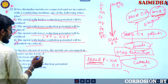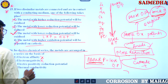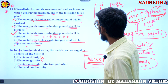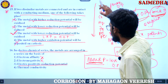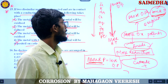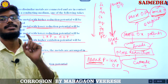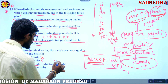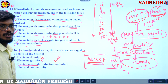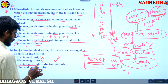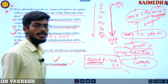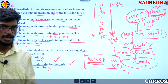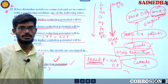So these metals are arranged in the increasing order of reduction potential. As you go down the series, the reduction potential increases. The answer here is reduction potential — not electron affinity, not electronegativity, not electropositivity or thermal conductivity.